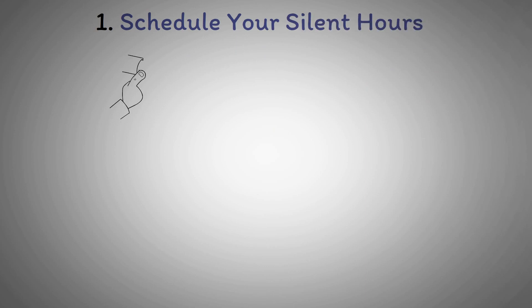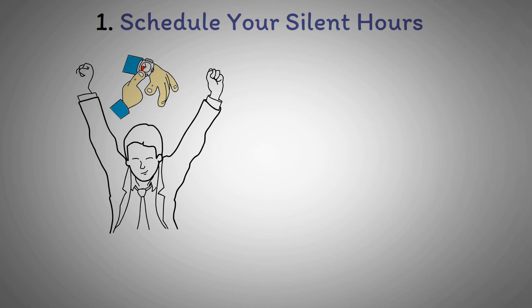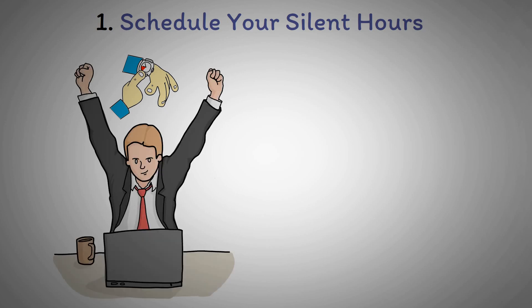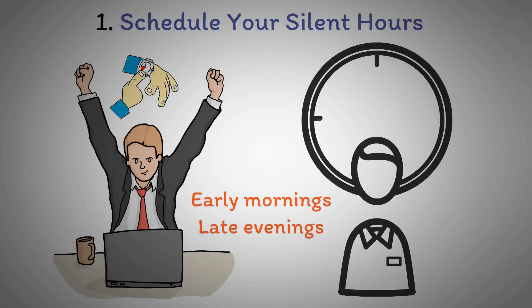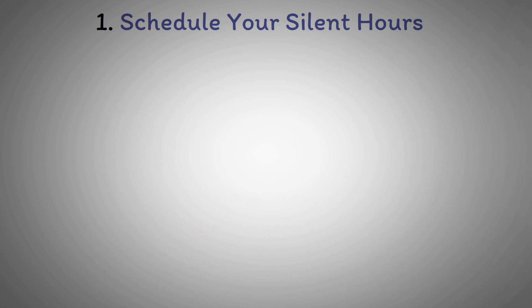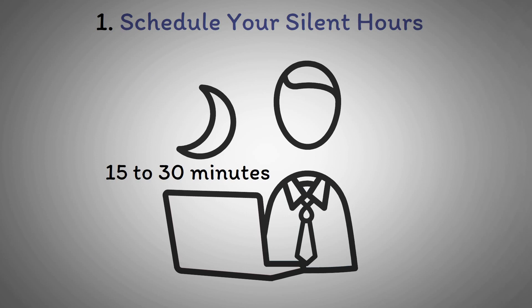Actionable Steps to Implement Silent Hours. 1. Schedule Your Silent Hours. Identify times in your day when you're least dependent on auditory input for motivation or concentration. Early mornings or late evenings might be ideal for some, but consider your personal schedule and lifestyle. Begin with short intervals, perhaps 15 to 30 minutes, and gradually increase the duration as you become more accustomed to the silence.